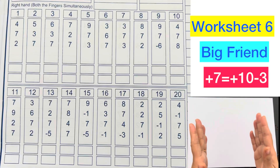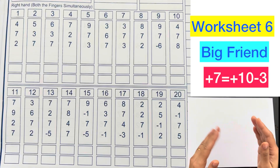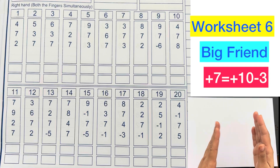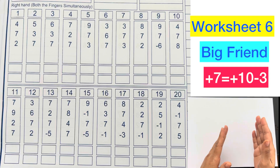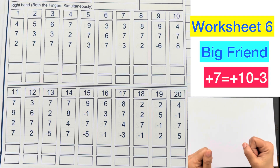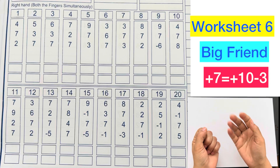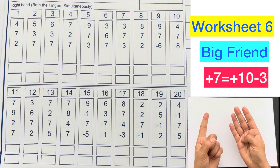Verse 8, No. 6. Big Friend Formula: Plus 7 equals Plus 10 Minus 3. First question is 4 plus 7, which is plus 10 minus 3.